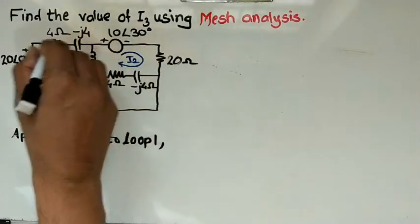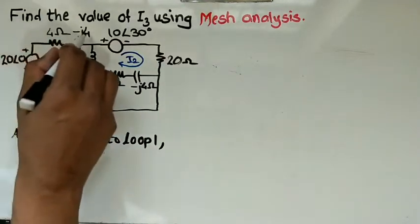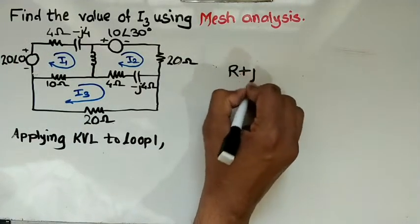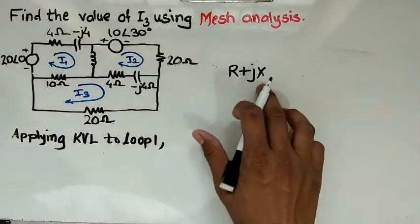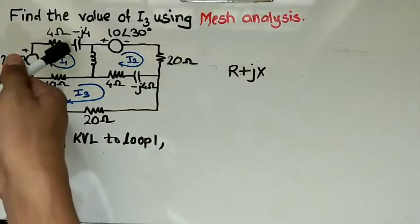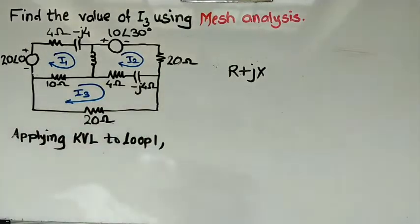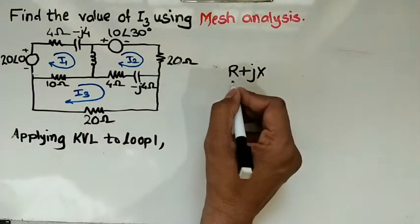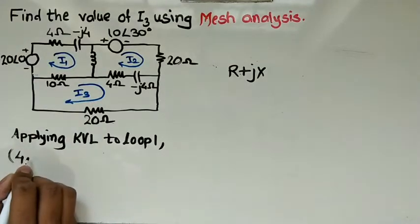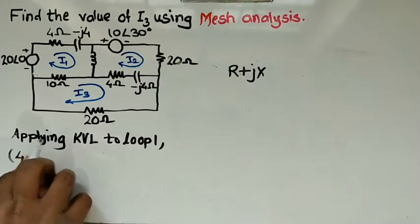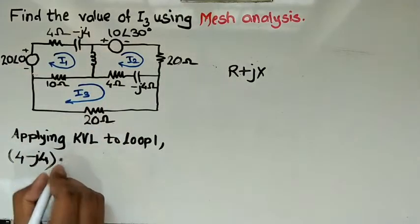This is minus j4 ohm. If you are starting from this point, the current will encounter these two different values — one is resistance and another is reactance. The simple formula is R + jXL or XC. XL is the resistance offered by the inductor (inductive reactance) and XC is the resistance offered by the capacitor (capacitive reactance). So we write it in the form R + jX. The total impedance will be 4 − j4. The current I1 is flowing, so it is I1.